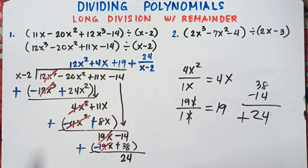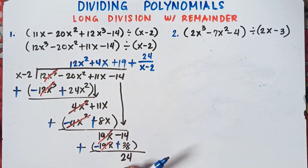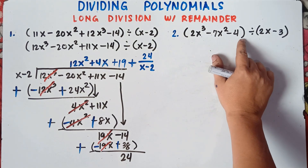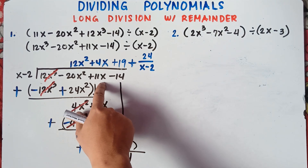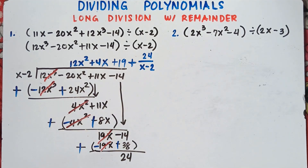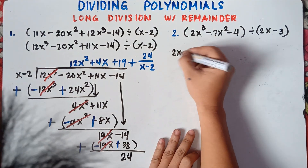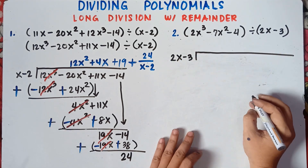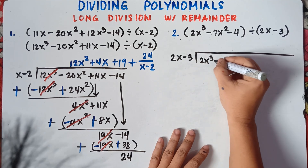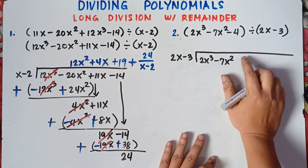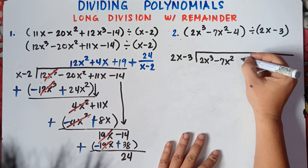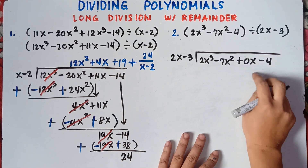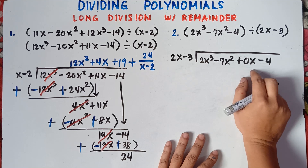Let's try number 2. Check, class — in number 2 we have x cubed, x squared, but we don't have x. We have 2x cubed minus 7x squared, and we don't have x, and the constant is negative 4. Since we don't have an x term, we can write this one as 2x cubed minus 7x squared plus 0x minus 4. If you don't have the value of x squared or x, you can write 0x or 0x squared.